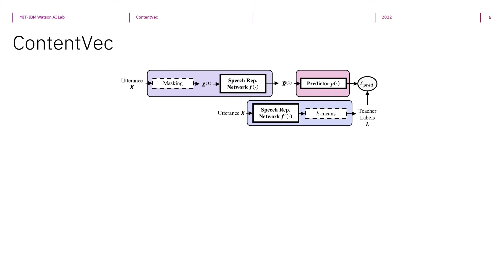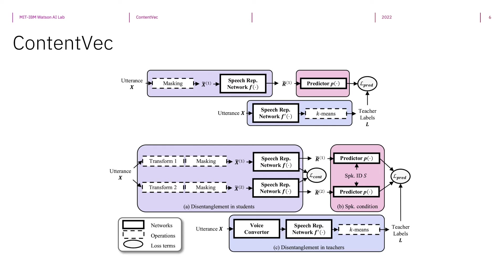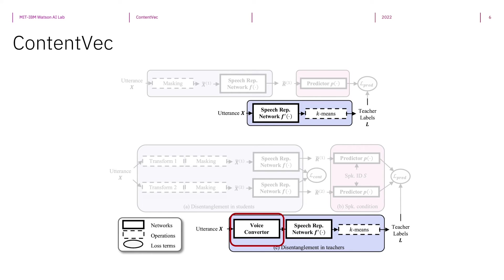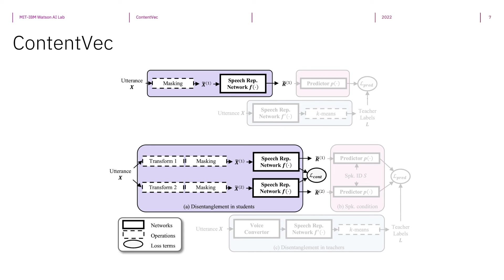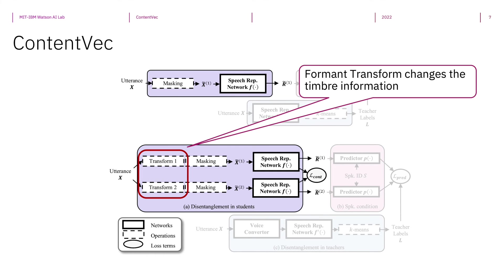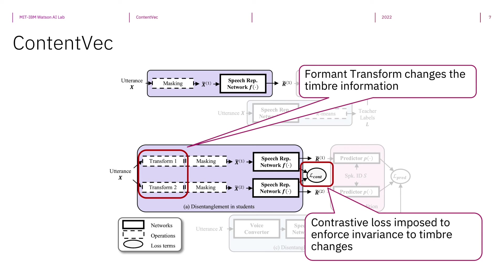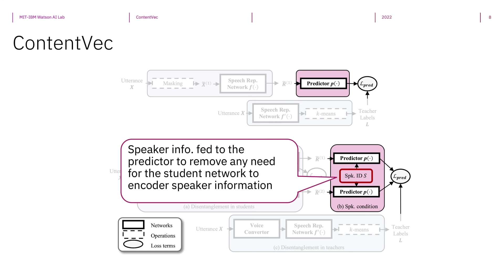Here is the system overview of ContentVec, which introduces disentanglement mechanisms in each of the three modules of HuBERT. In the Teacher module, we introduce a pre-trained voice converter to convert all voices into a single speaker. In the Student module, which becomes two paths, we introduce a random formant transform to alter the speaker information, and a contrastive loss to enforce that representations of the same utterance passing different formant transforms should be similar. Finally, in the Predictor module, we feed the speaker embedding to the predictor, so that we can remove any need for the student representation to encode speaker information.